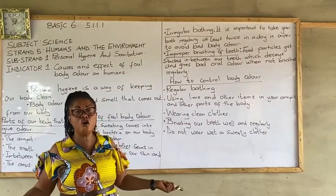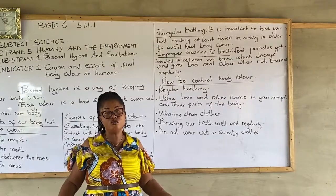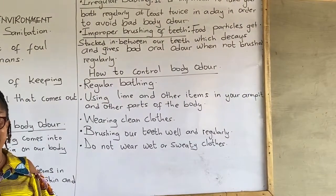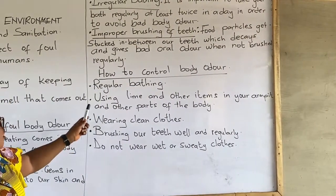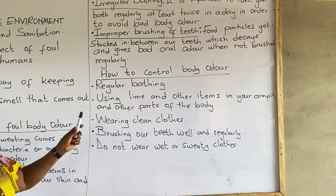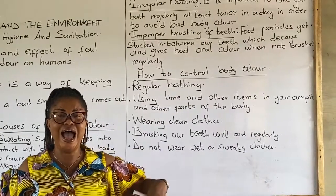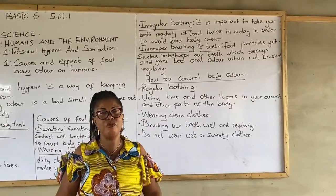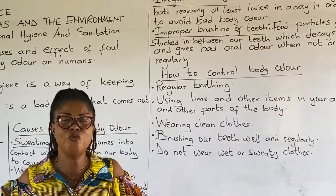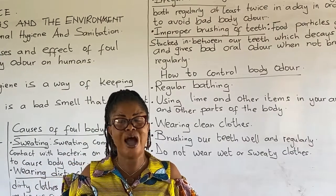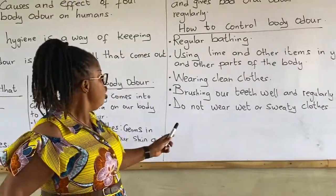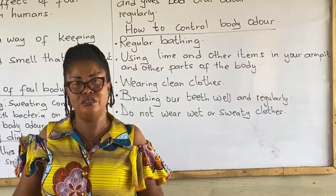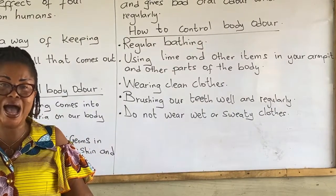How can you control body odor? Regular bathing — you have to bathe at least twice a day to prevent body odor. You can also use lime or ashes from charcoal under your armpits for a few seconds before you bathe. Brush your teeth well and regularly to avoid oral mouth odor. And do not wear wet or sweaty clothes — when you play and sweat into your clothes, don't wear them again because it gives bad body odor.